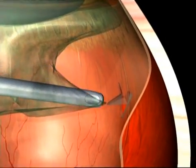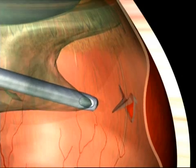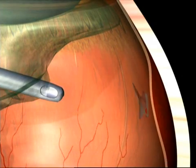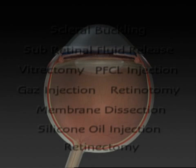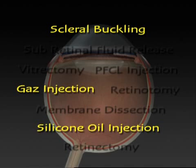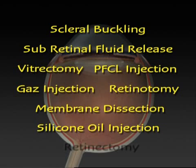Lastly, he could remove the vitreous tractions that caused the detachment in the first place, thus giving the retina back its flexibility. This is called a vitrectomy, or removal of the vitreous. All of these procedures can be done together, as well as with other complementary steps, like membrane dissection or removal of the fluid underneath the retina.